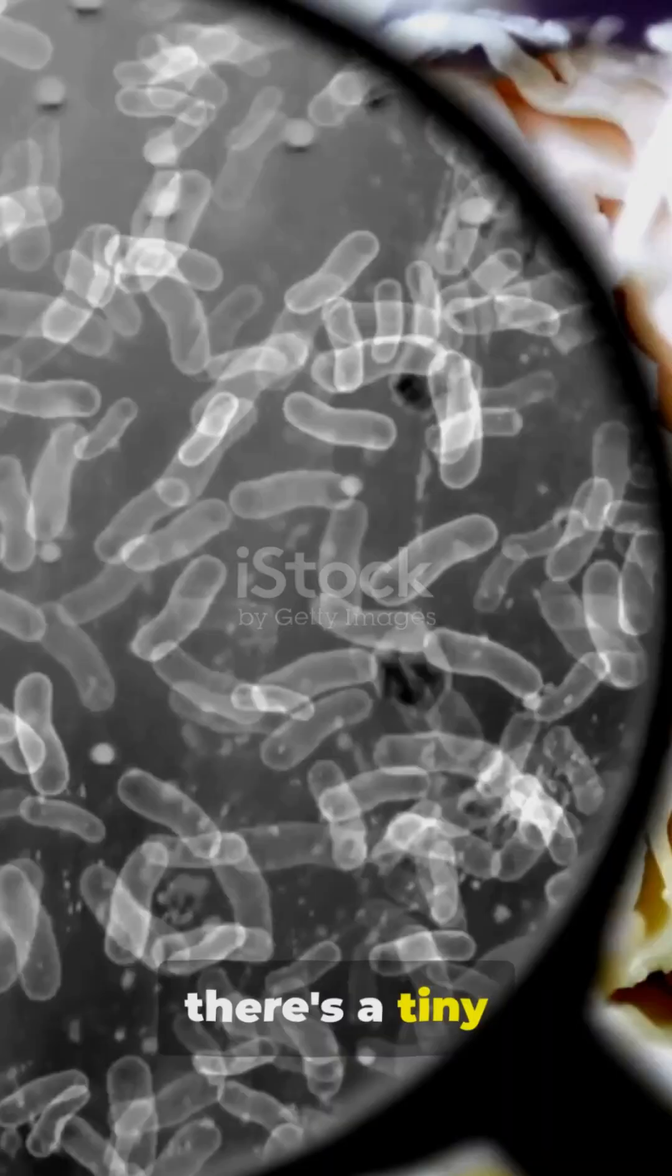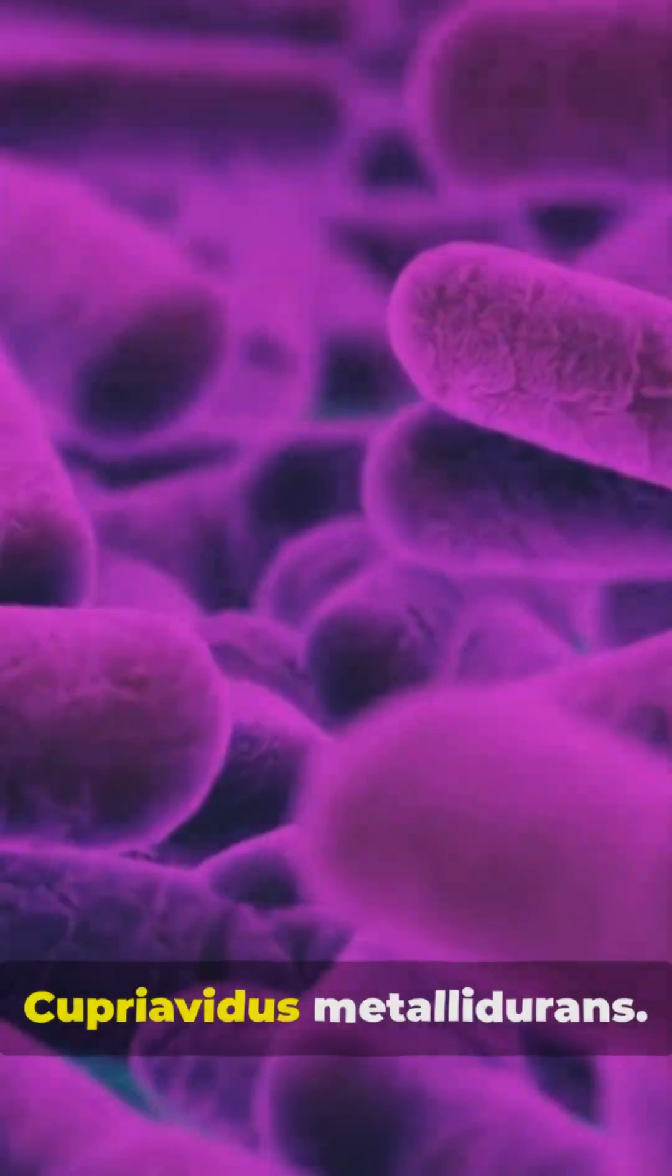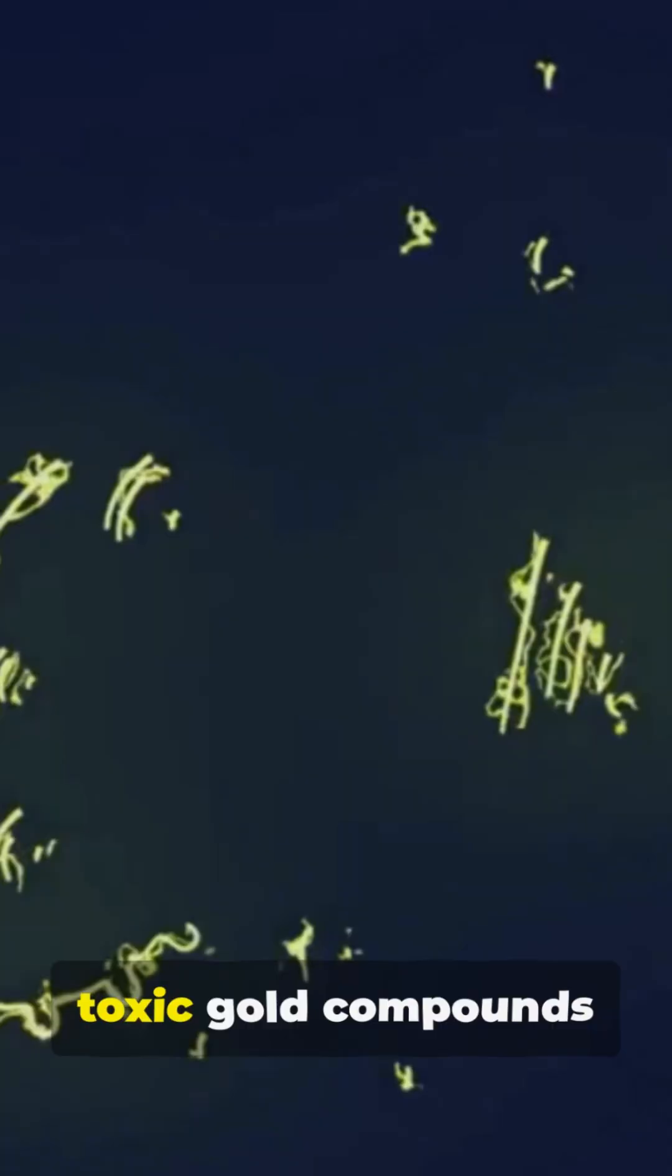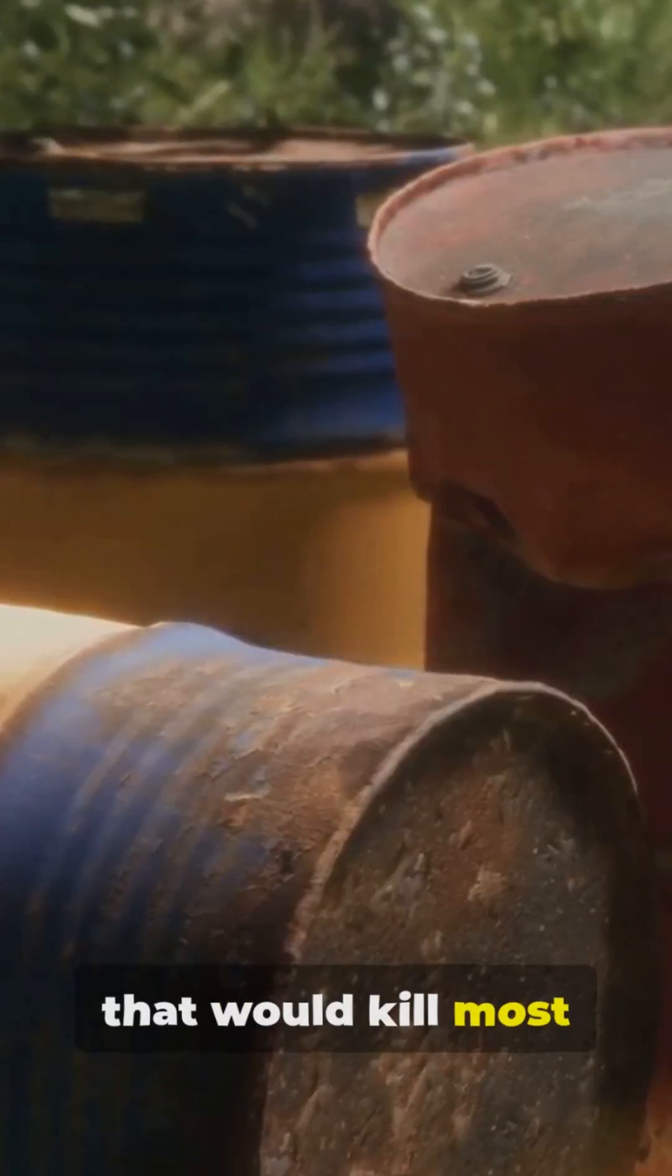Deep in the dirt, there's a tiny microbe called Cupriavidus metallodurans. It munches on toxic gold compounds that would kill most living things.